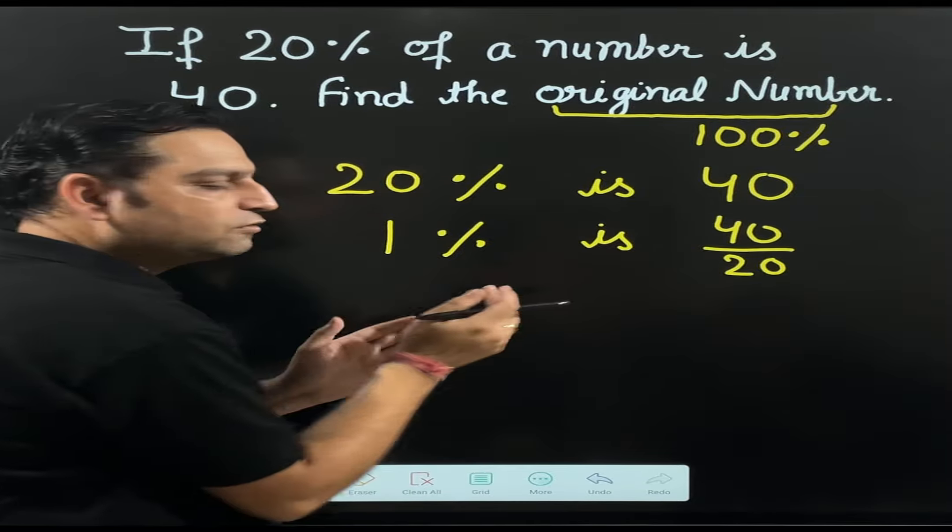Which method I am using? Unitary method. 20% is 40. Then, 1% will be. What is the 1%? It is given by the division. 20 will come in denominator because 40 divided by 20 I will do. Once you reduce them into lowest form, I will get 2. Do remember. 20% was 40. 1% is 2.